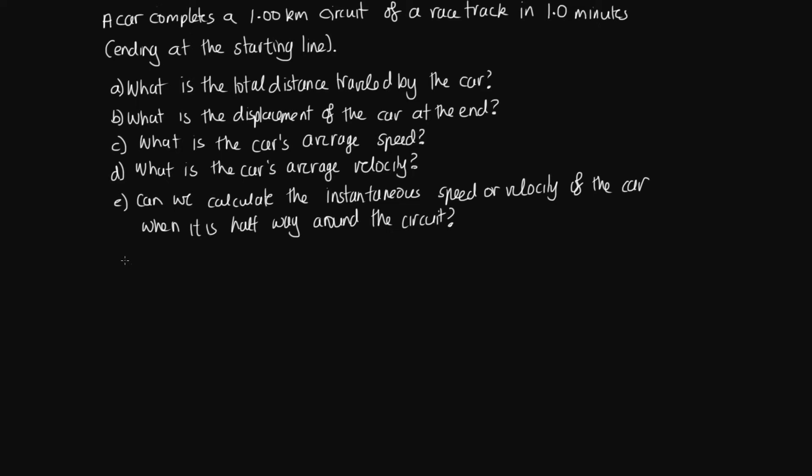Okay, so part A is easy because this is given to us in the question. We're told that it completes a 1.00km circuit of the racetrack. So the total distance it travels is equal to 1.00km.